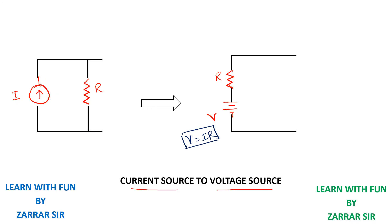The voltage is calculated using Ohm's Law: V = IR. Let's take resistance as 5 ohms and current as 4 amperes. The resistance value remains the same — 5 ohms. My voltage will be 5 times 4, which is 20 volts. Remember: resistance is always in parallel with current, and always in series with voltage during source transformation, and the resistance value does not change.